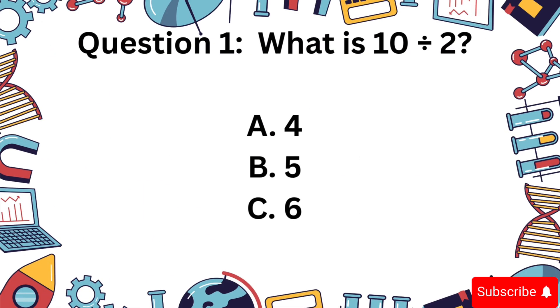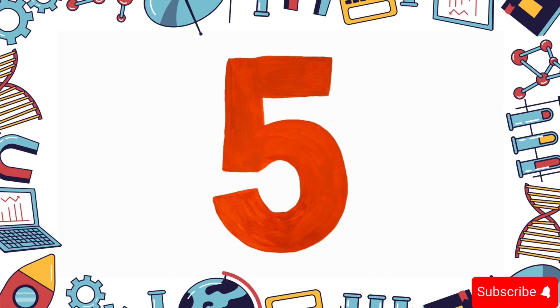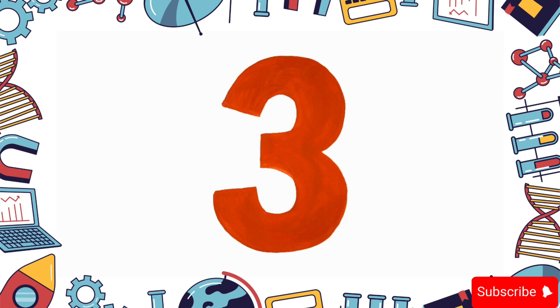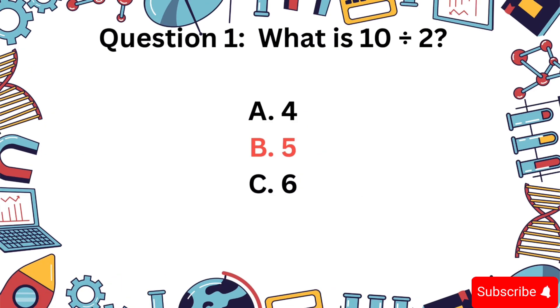Question 1. What is 10 divided by 2? Is it A, 4, B, 5, or C, 6? The correct answer is B, 5.